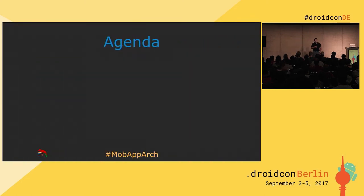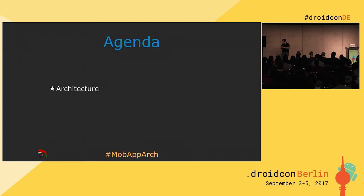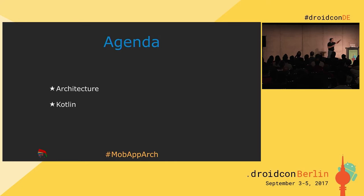Before moving on, let me cover the three topics I'm going to talk about today. The first is a brief introduction to architecture. Then I'll cover some usages of Kotlin for applying that architecture in Android, with different examples. Finally, I'll do a brief recap. So if you want to sleep, you have to sleep from now until the recap.